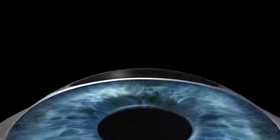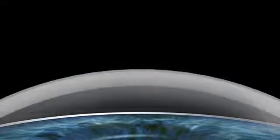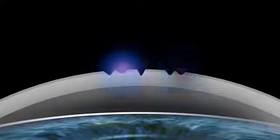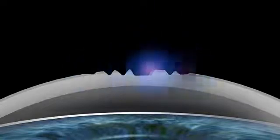TransPRK is an advanced surface laser treatment because the epithelium is removed by the excimer laser more precisely and uniformly than with either manual or alcohol-assisted debridement. TransPRK applies an epithelial thickness profile that is thinner in the center than in the periphery.